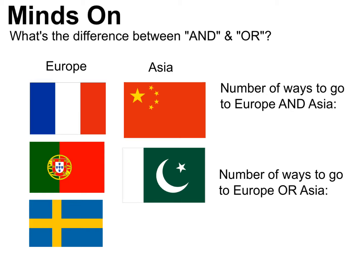We're going to quickly go over the difference between AND and OR. Here's an example: let's say you're going to go on a trip to Europe or Asia. There are three countries in Europe and two in Asia. If we think about the number of ways to go to Europe AND Asia, we've got three ways to go to Europe and two ways to go to Asia.